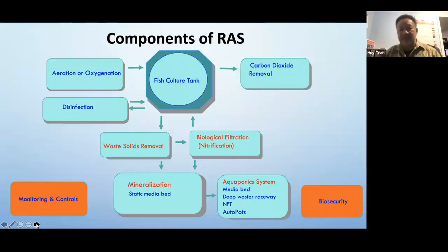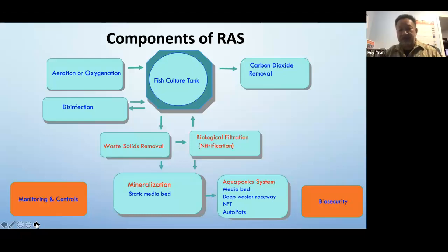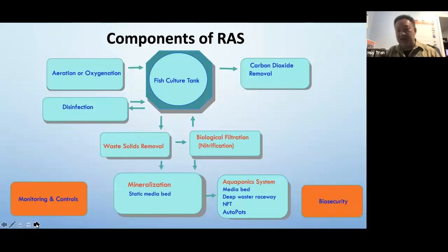The components of RAS are pretty simple. The main things are your culture tank or holding vessel; aeration and oxygenation, chosen based on density, availability, and cost; disinfection; solid waste mechanical filtration; biological filtration and nitrification; carbon dioxide removal based on density; monitoring and control — where you can really get out of control with needs versus wants; mineralization of solid waste; and biosecurity.